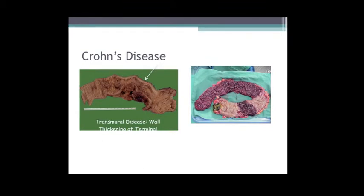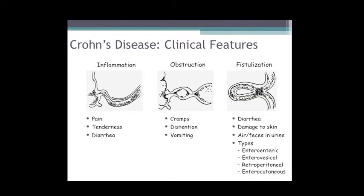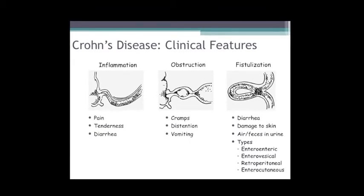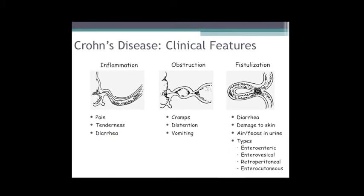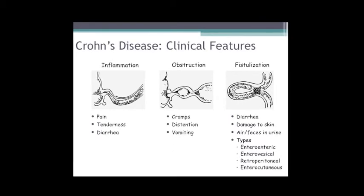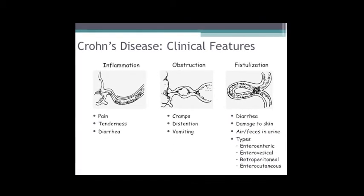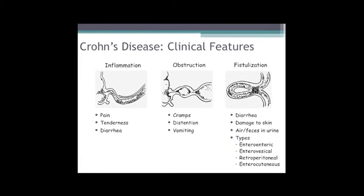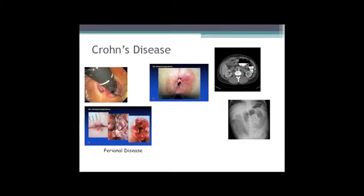The clinical features are largely due to the transmural nature of inflammation: you get pain, tenderness, and diarrhea. As stricture formation develops you may get cramps, distension, and vomiting. As the disease works through the bowel wall you get fistulas - enterocentric, enterovesical going to the bladder, going to the retroperitoneum, or enterocutaneous going to the skin.